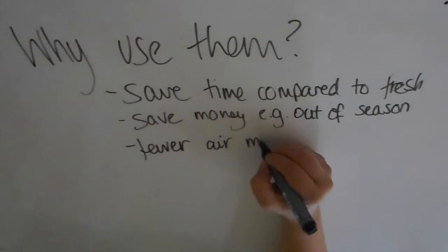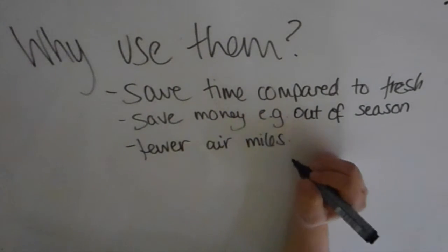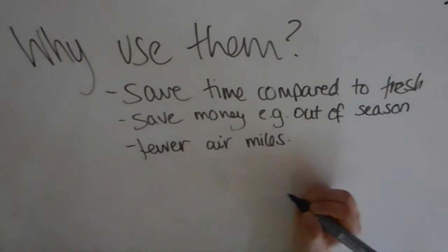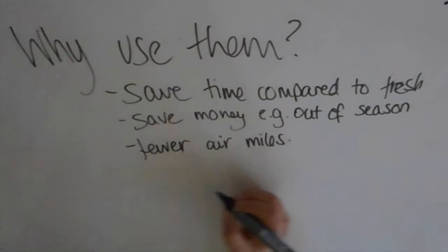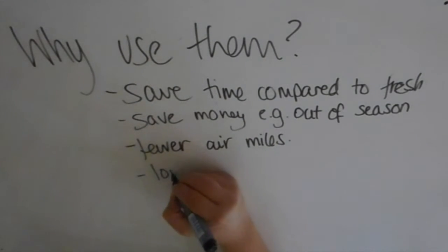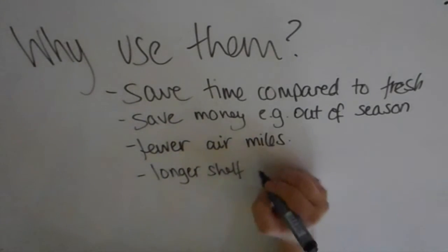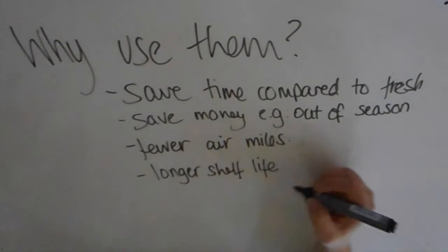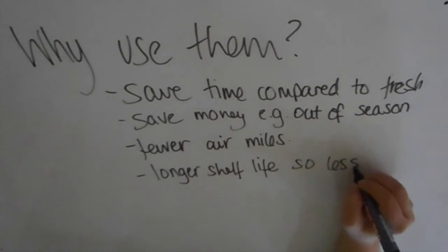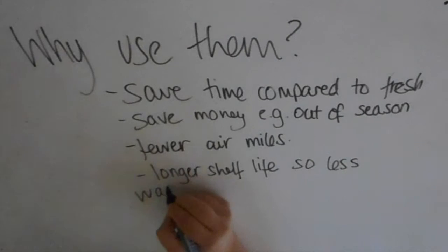There are also fewer air miles involved with some convenience foods. If a product is out of season, having it as a convenience product means it hasn't had to be transported. They also have a longer shelf life, so you can keep them for a long period of time, which means less waste because you don't need to use them until you're ready and they won't go off.